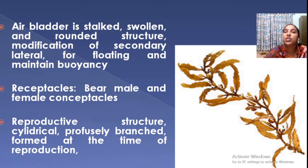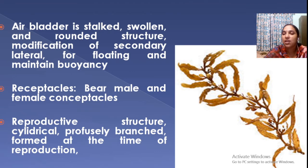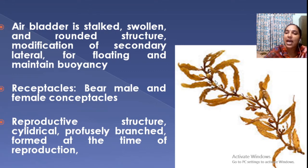Another peculiar feature of the plant body is the presence of air bladders — grape-like structures present on the axis that help the plant to float in the water, giving it buoyancy.